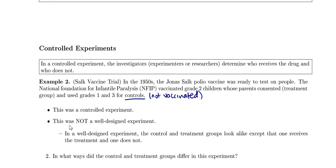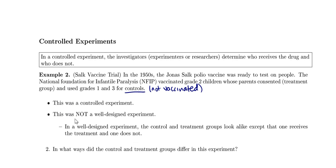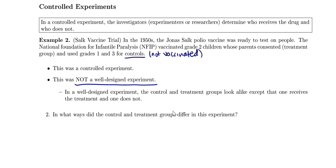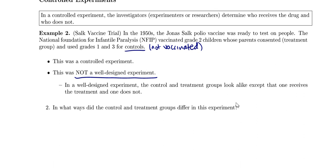But it was not a well-designed experiment — this was a bad experiment. Your treatment and control groups should look alike in as many ways as possible, except that one gets the treatment and one does not. You want your two groups to be as identical as possible, except for the fact that one gets the treatment and one does not. So how do the control and treatment groups differ in this experiment?